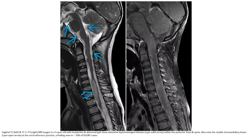This is a T2 and T1C+ fat-saturated MRI in a five-year-old with headache and papilledema. There is extensive leptomeningeal disease within the posterior fossa and spine. Also note the T2 intramedullary lesion in the cervical-thoracic junction, a finding seen in 20% of diffuse leptomeningeal glioneuronal tumor cases.